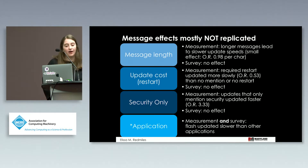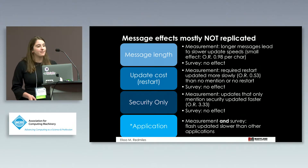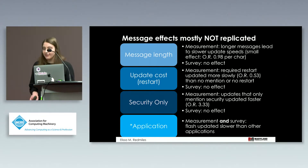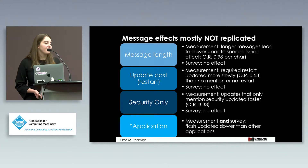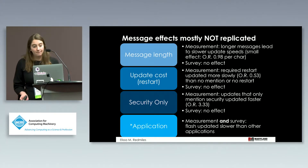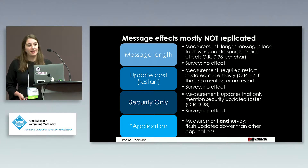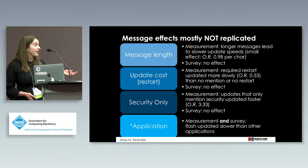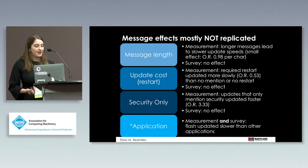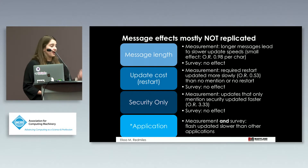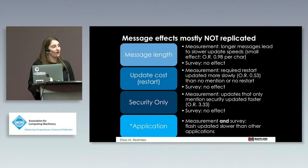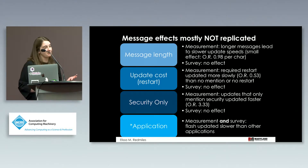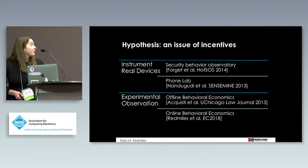Filtering did not help much for message-specific effects. All message-specific factors had an effect in the measurement data: messages that were longer were updated more slowly, messages indicating a restart was required were slower to be updated, and security-only updates were faster to be updated. But in the survey data, only application type had an effect. The question is: why?